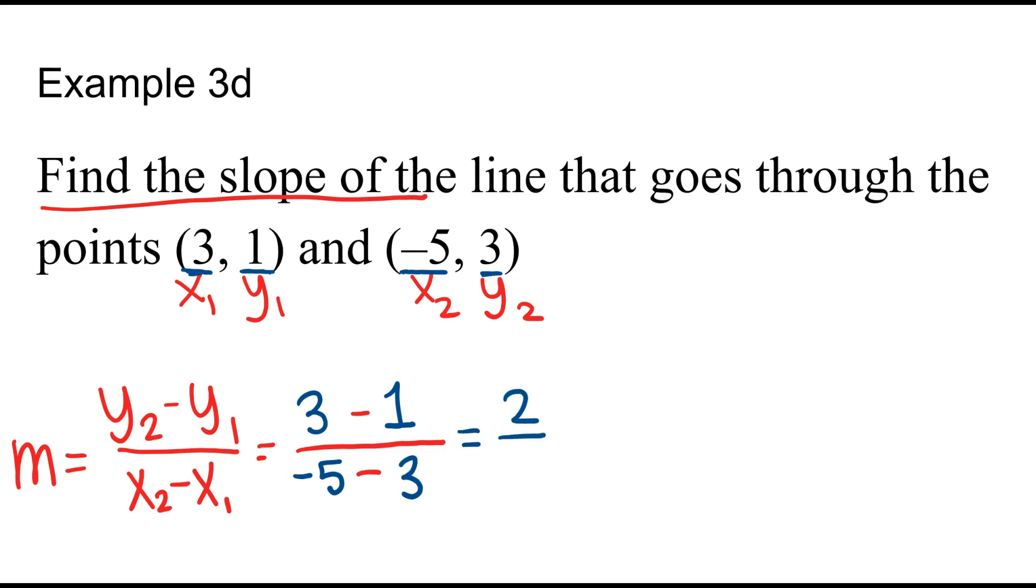3 minus 1 is 2 over negative 8. Now they do have a common factor. They both can be divided by 2. 2 divided by 2 is 1. Negative 8 divided by 2 is negative 4. The slope here is negative 1 fourth.